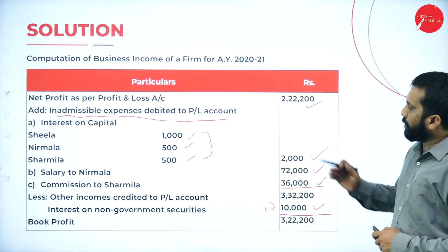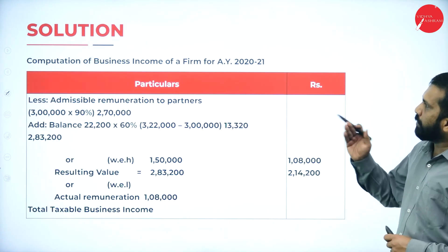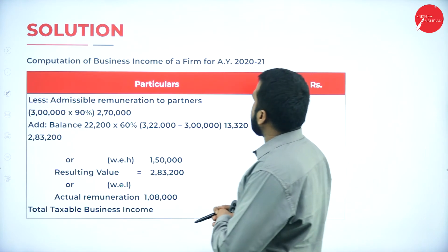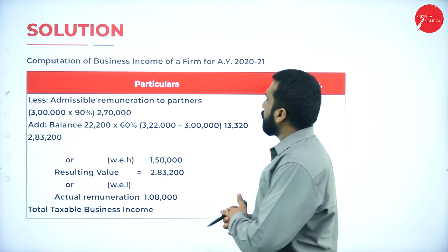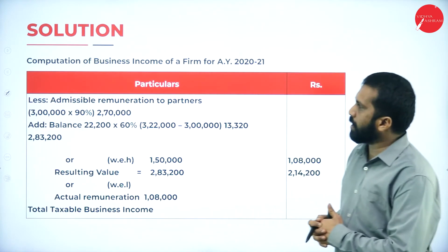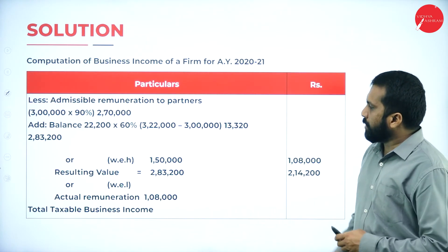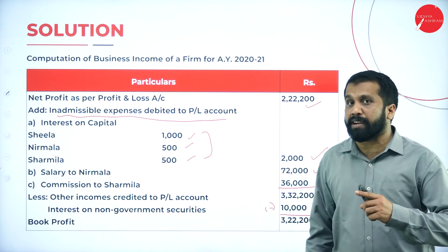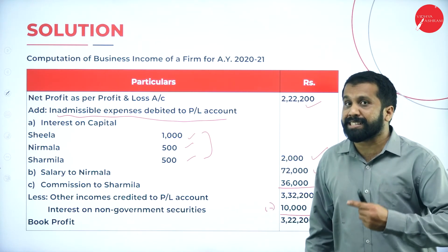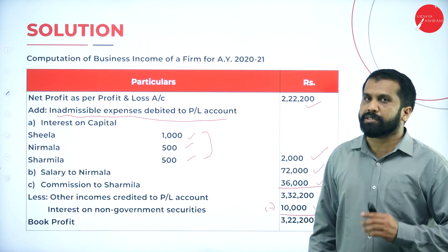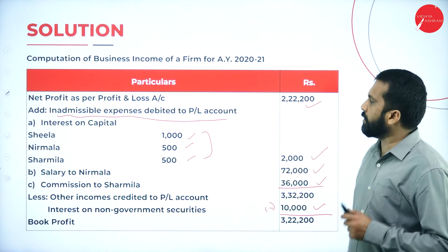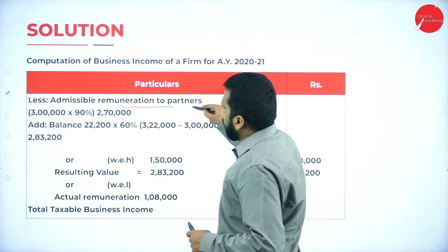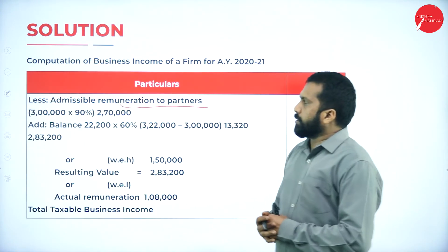Next, computation of business income of the firm for assessment year 2021. We need to find not only book profit but also business income. This involves finding the admissible remuneration. Business income depends on the remuneration calculation.